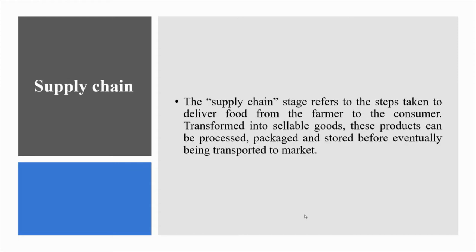Supply chain stage. The supply chain stage refers to the steps taken to deliver food from the farmer to the consumer. Transforming into sellable goods, these products can be processed, packaged and stored before eventually being transported to market. Post-harvest food loss is an especially important issue across the developing world, where the infrastructure, energy grids and transport systems are often poor or missing. In these countries, more than 40% of food losses occur post-harvest and during processing.